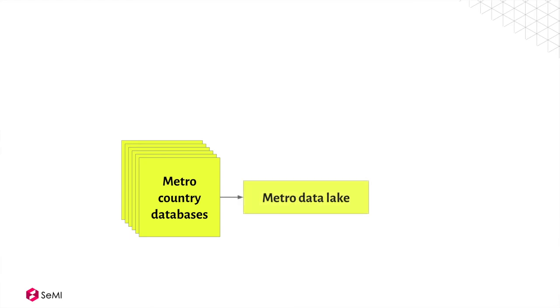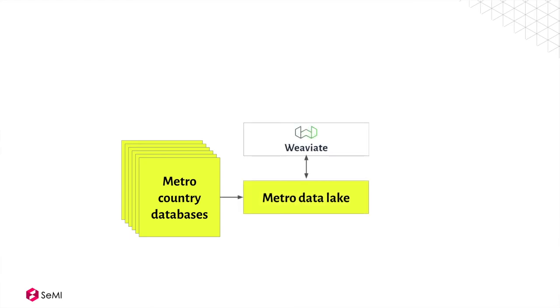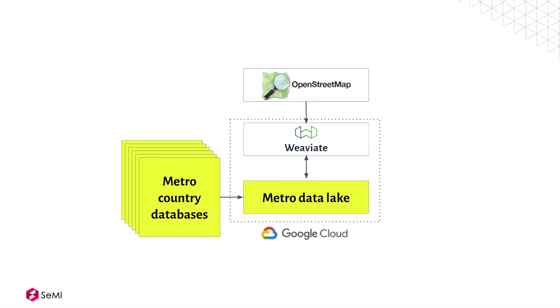The original customer data comes from 25 countries having several different solutions. It goes into our data lake, where Weaviate processes the data, does the comparison, and puts the processed results back into our data lake, which can then be consumed by the application via standard APIs.